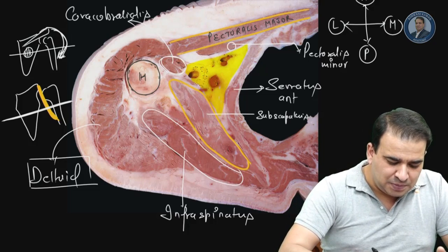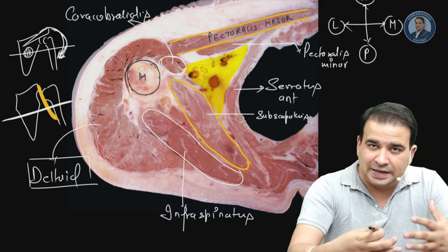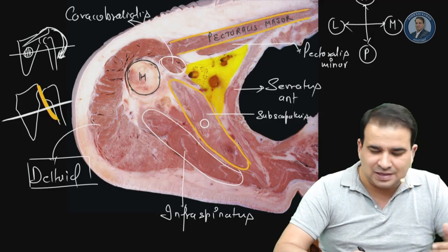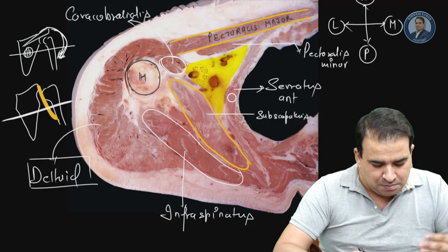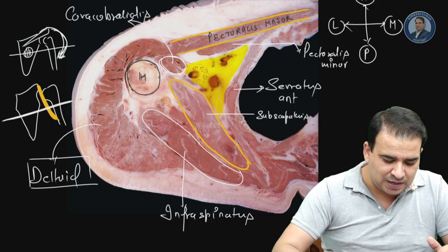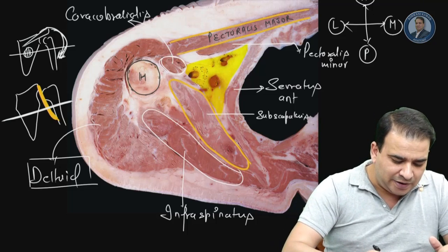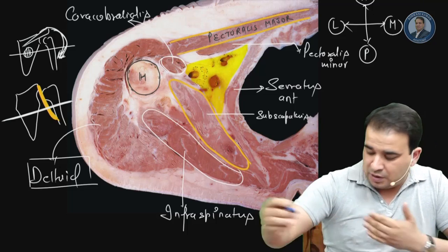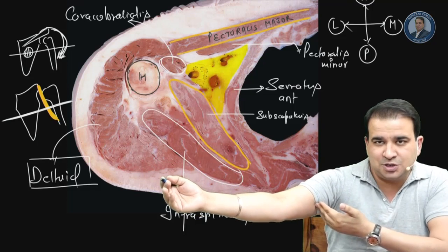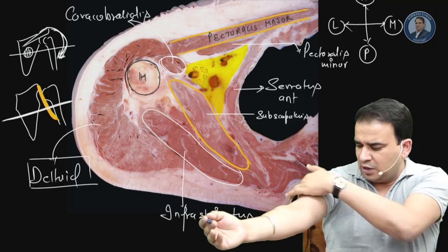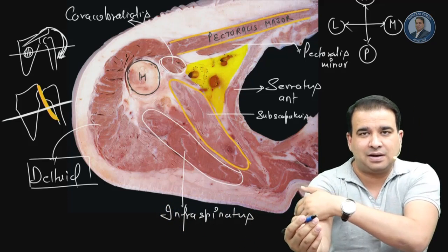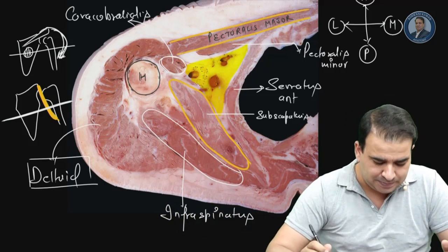To summarize the walls: pectoralis major and minor form the anterior wall; subscapularis forms the main posterior wall; serratus anterior covers the rib cage on the medial side forming the medial wall; and laterally, coracobrachialis runs on the medial side of the shaft of the humerus, attaching exactly opposite to the deltoid tuberosity — deltoid tuberosity is on the lateral side, coracobrachialis inserts on the medial side.